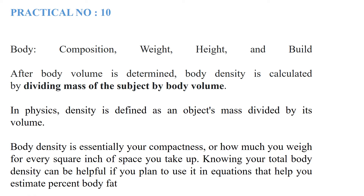The last practical is about body density. Body density refers to composition in terms of weight, height, and build. After body volume is determined, body density is calculated by dividing the mass of the subject by the body volume. In physics, density is defined as mass divided by volume: D = M/V. Body density is essentially mass per unit volume — how much you weigh for every unit of space you take up.